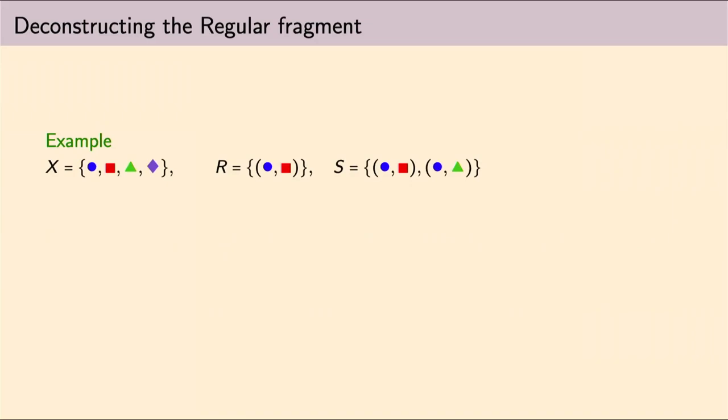I'll not give you the detailed semantics of this language, but I'd rather show you with an example how diagrams in this language behave. Consider the set X of these colorless shapes and two relations, R and S on X. Now, consider this diagram built out of the syntax we saw before.